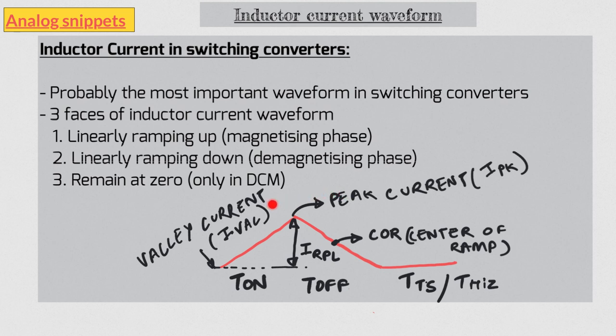Notice that the inductor current waveform is a continuous or smooth waveform — there are no sudden jumps or discontinuities in it. This is consistent with the property of an inductor, where we can't change the current suddenly. Now let's look at the three fundamental topologies and put this waveform in perspective.